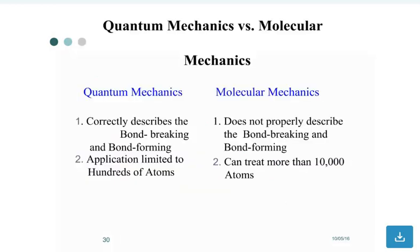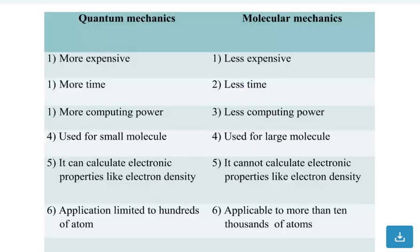Quantum mechanics versus molecular mechanics. Quantum mechanics correctly describes bond breaking and bond forming. Application is limited to hundreds of atoms. Molecular mechanics does not properly describe bond breaking and bond forming, but can treat more than 10,000 atoms.